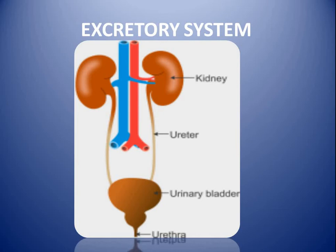The process by which waste gets removed from our body is called excretion. Our excretory system consists of the kidney, ureter, urinary bladder, and urethra. The kidney acts as a filter where urine is formed, and urine contains those harmful waste products formed inside the body.